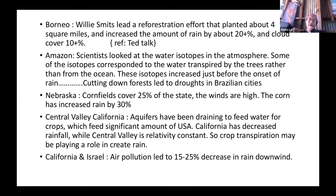In the Amazon, researchers looked at water isotopes and found that the water was coming from the trees rather than the oceans just before it started raining. This indicated that the trees themselves were creating rain, and it's not just water from the oceans that creates rainfall.